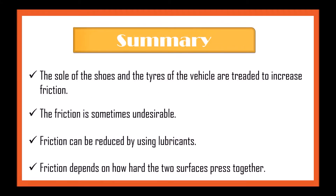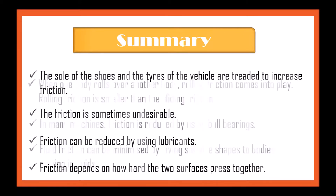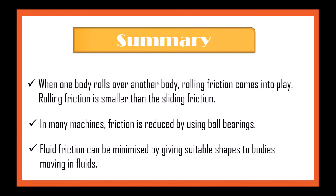The sole of the shoe and the tire of vehicles are treated to increase friction. Friction is sometimes undesirable. Friction can be reduced by using lubricants. Friction depends on how hard the two surfaces press together. When one body rolls over another body, rolling friction comes into play. Rolling friction is smaller than sliding friction. In many machines, friction is reduced by using ball bearings. Fluid friction can be minimized by giving suitable shapes to bodies moving in fluids.